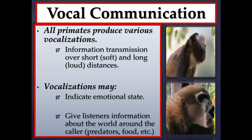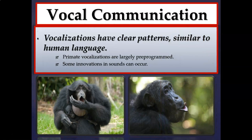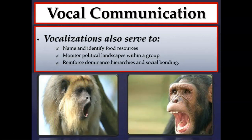Primates also vocalize to identify food, letting the entire group know about a great patch of fruit. Vocalizations have clear patterns similar to human language. While primate vocalizations may be largely pre-programmed, primatologists have noticed that innovations in sound can occur — another form of evidence for culture. Vocalizations among one chimpanzee group may differ from another's. They can also serve to name food resources, monitor political landscapes within or between groups, and reinforce dominance hierarchies and social bonding.